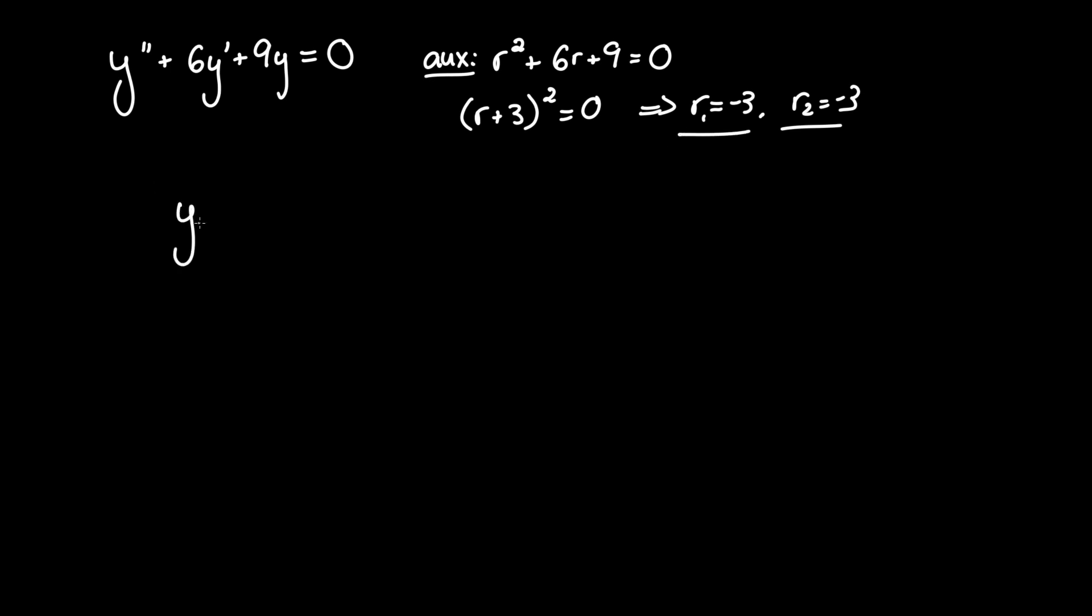In the case of a repeated solution, we have to follow the y-homogeneous format of c1e to the r1t plus c2 times t e to the r2t. C1 and c2 allow for a degree of freedom, such that there are infinite solutions, and since r1 and r2 equal each other, we have to differentiate the second term from the first by just multiplying it by the independent variable t.